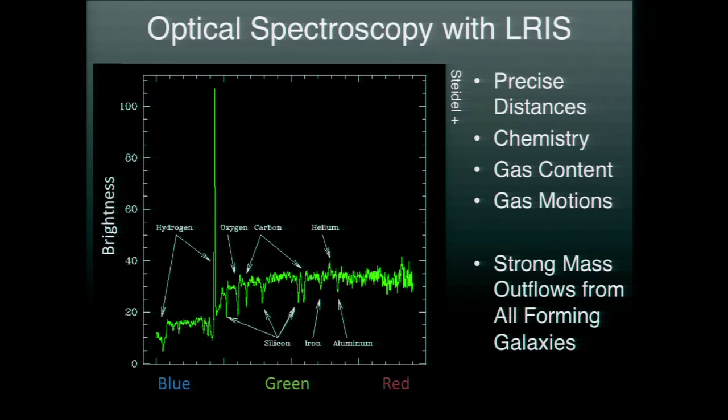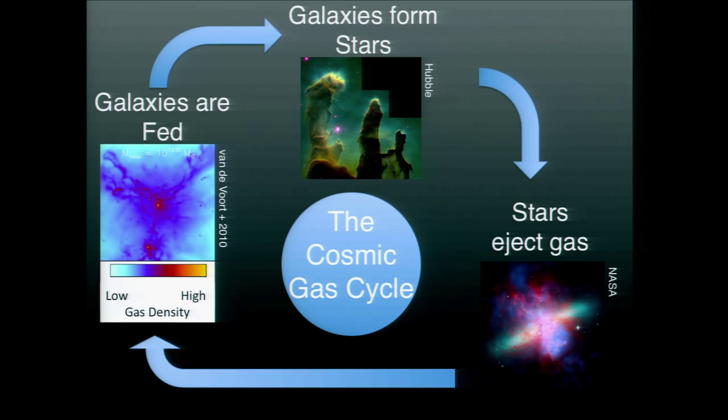This is a tracer of the past history of star formation in these systems. In addition to that, we can also learn about how much gas is in these systems and the motions of the gas with respect to the stars. What was found was that there are very strong winds coming out of these galaxies, ejecting an enormous amount of mass — sometimes more than the amount of mass actually being formed into stars.